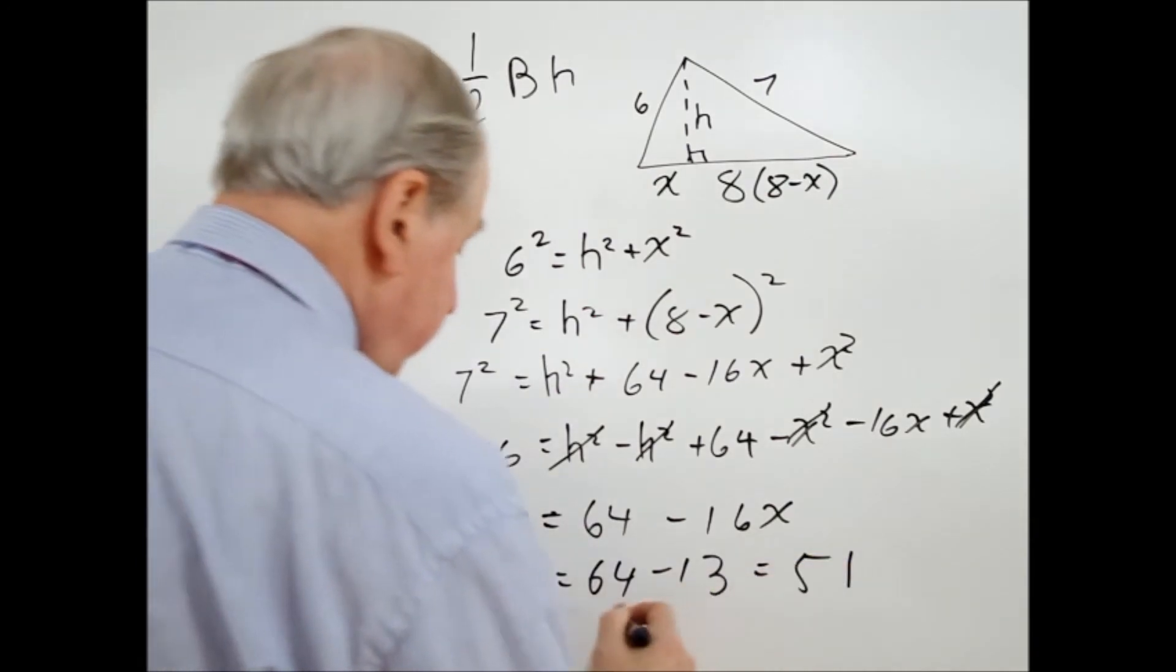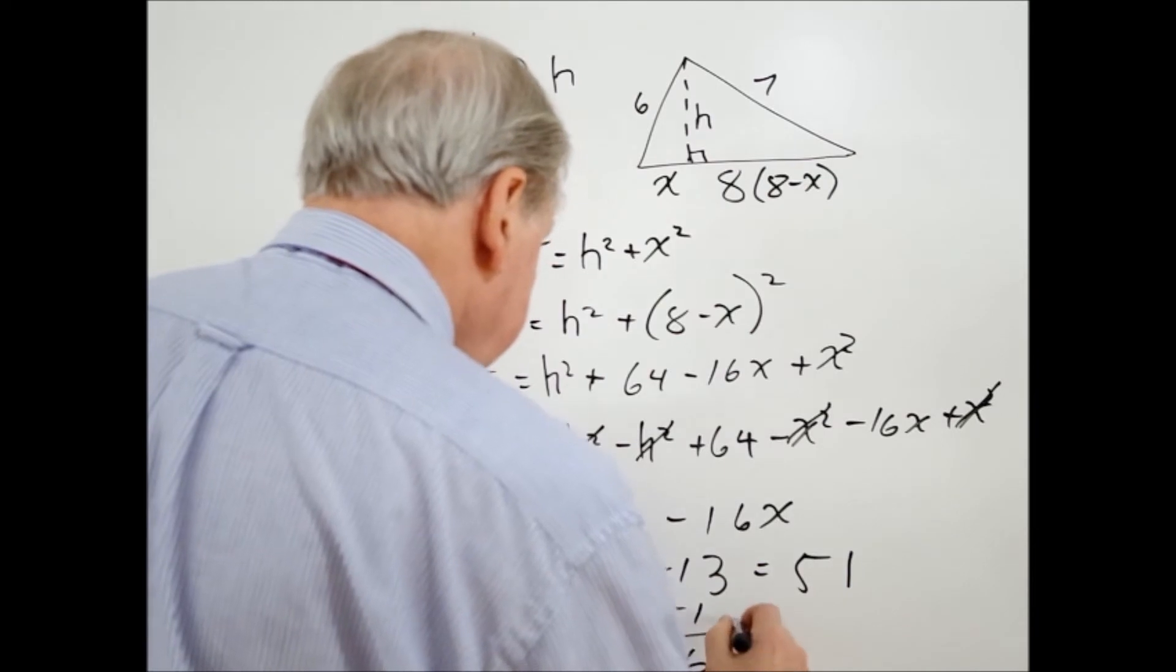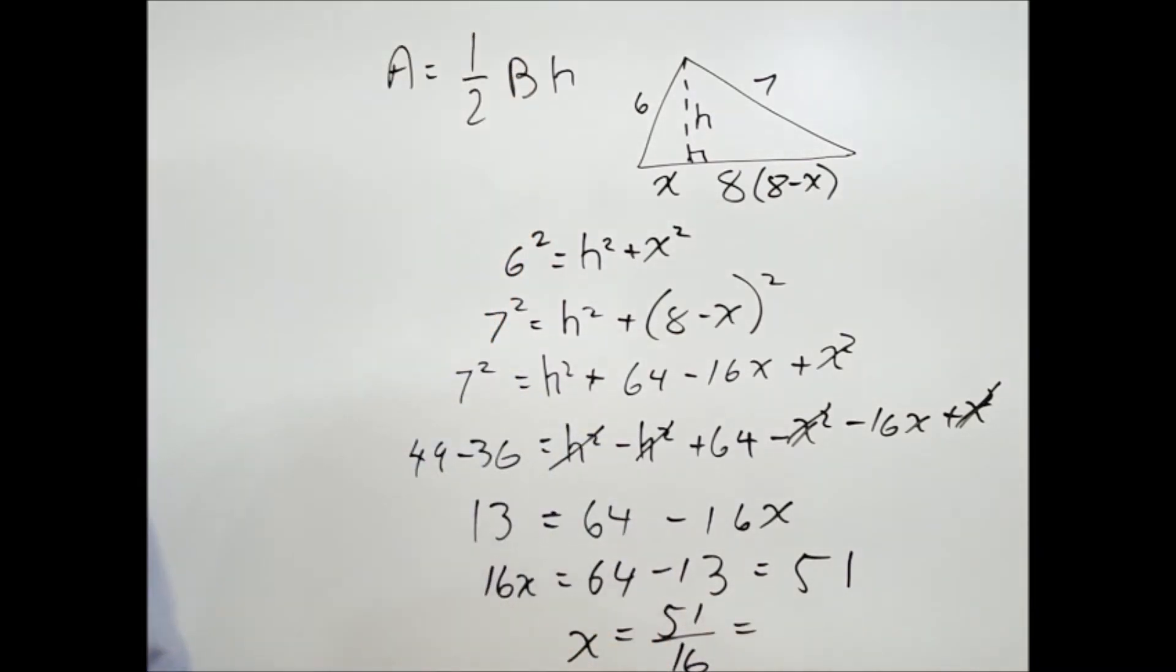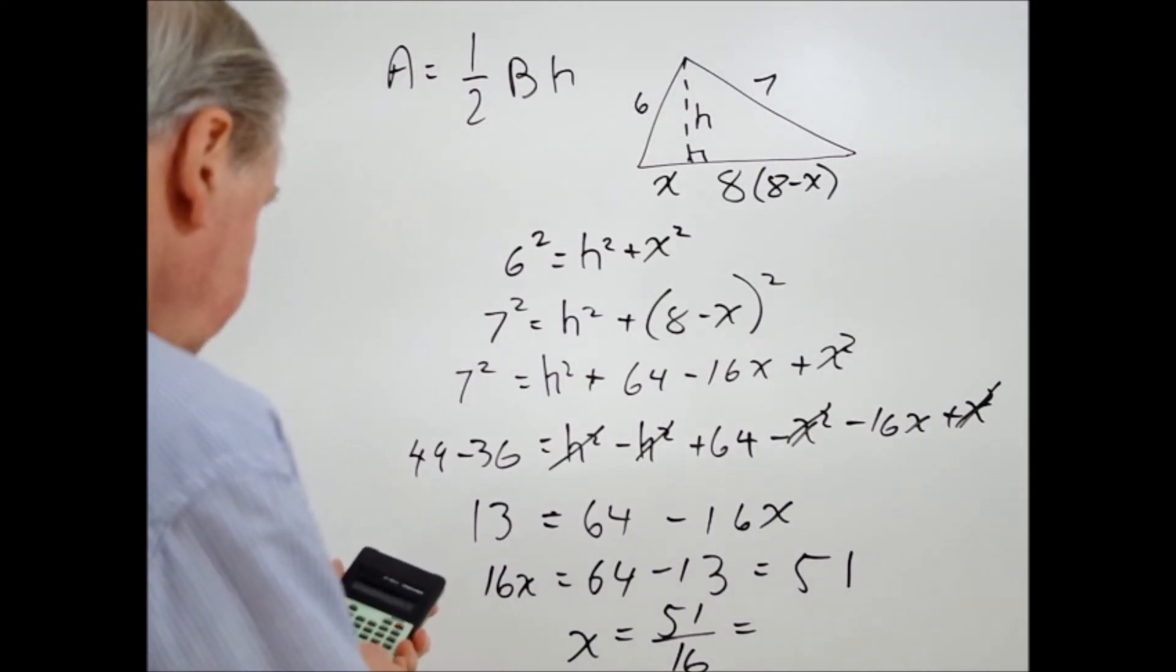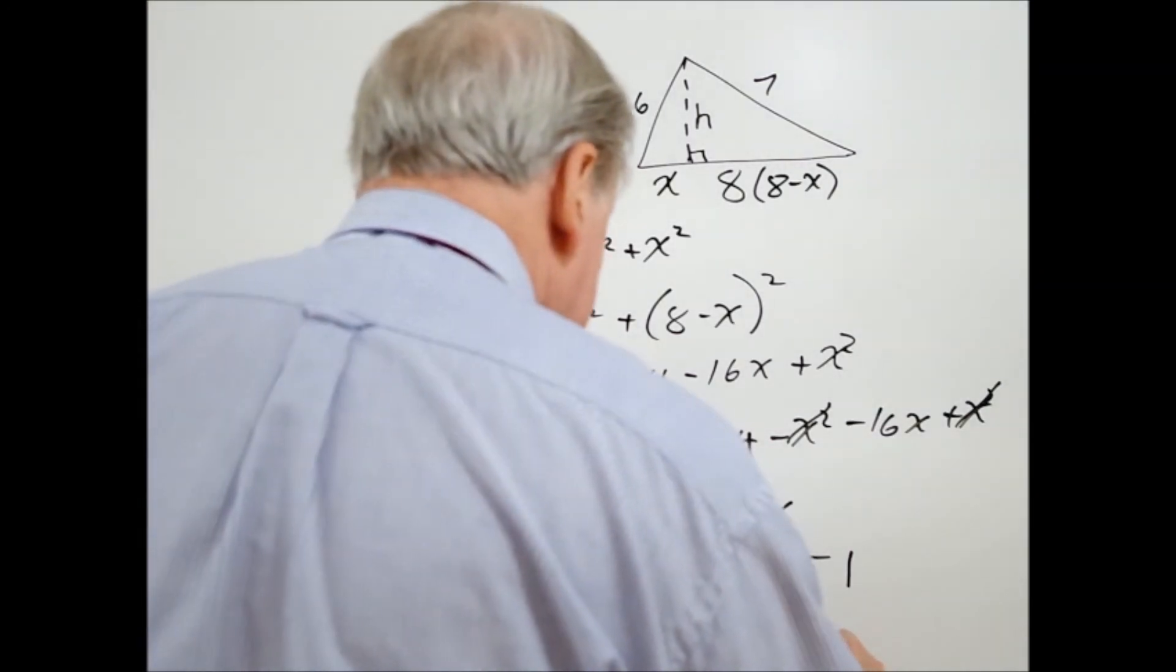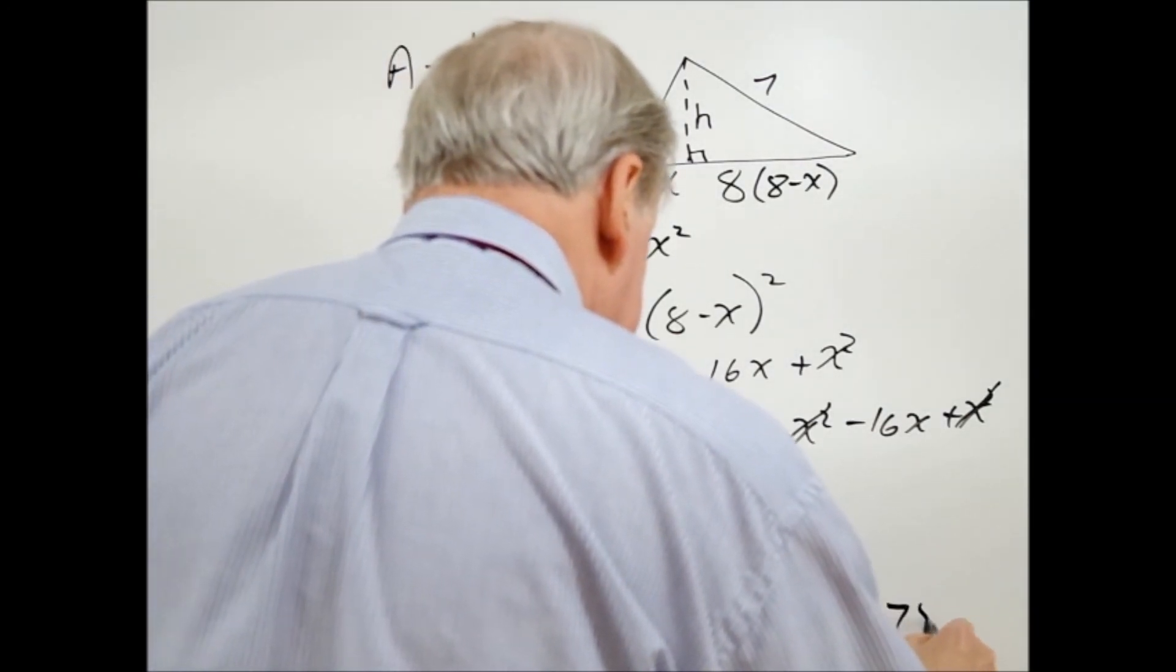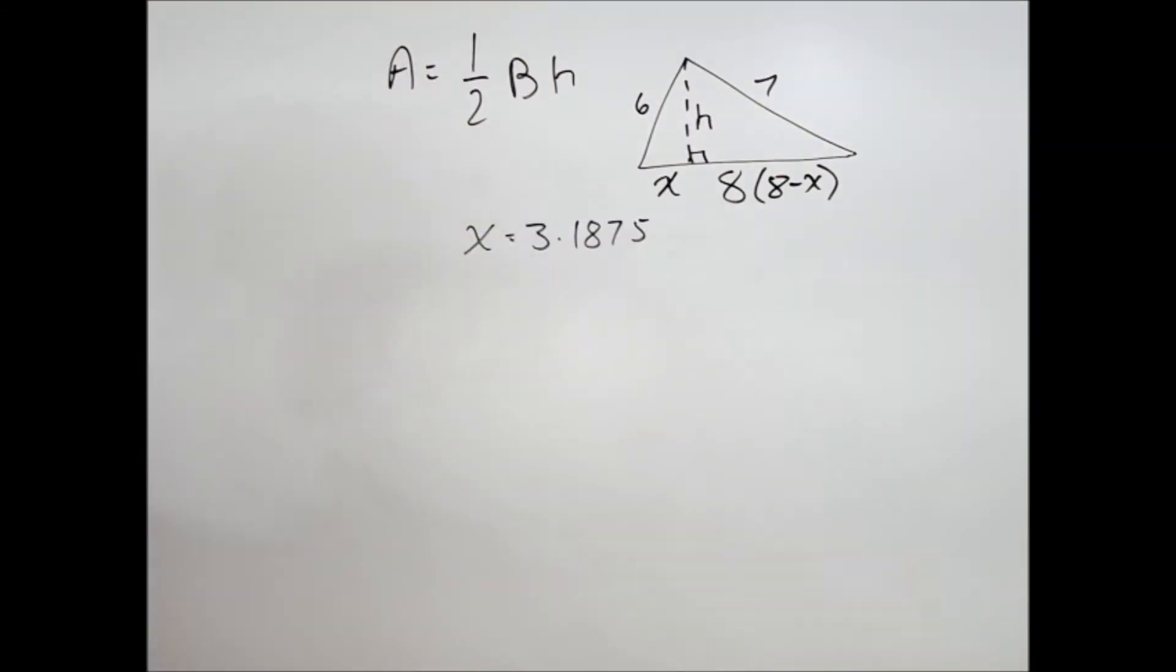So that means that X is equal to 51 divided by 16, and I'll work that out in the calculator. 51 divided by 16 equals 3.1875. All right, and we've come to the point that X is equal to 3.1875.